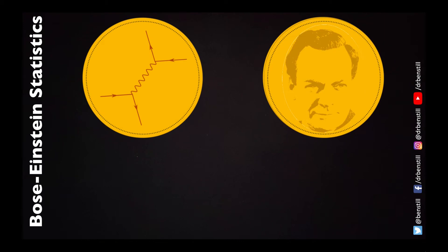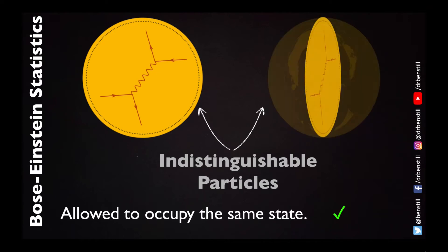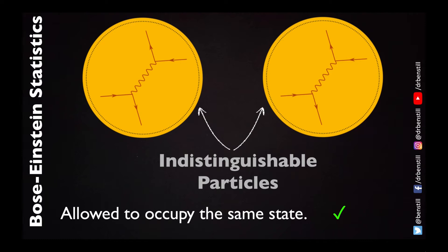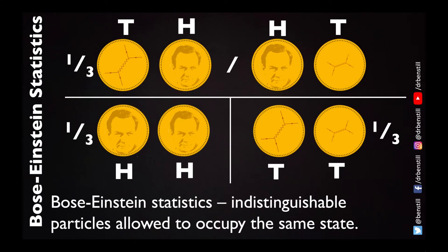Now let's think about Bose-Einstein statistics, which explain the behaviour of boson particles. Bosons, like other fundamental particles, are indistinguishable from one another — one boson looks exactly the same whether in the heads or tails state. But like Maxwell-Boltzmann, bosons are allowed to occupy the same state. Because the particles are indistinguishable, the heads-tails and tails-heads outcomes merge into one possible state. This means for Bose-Einstein statistics there are now only three possible outcomes, each with equal probability of one third. This means it's more likely to find particles in the same state — the probability of heads-heads has gone from one quarter to one third.